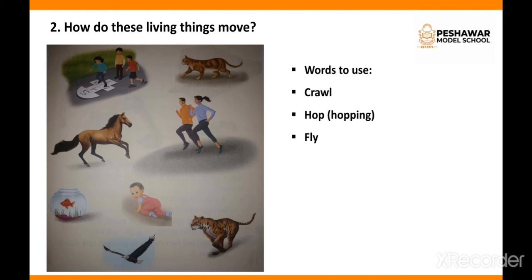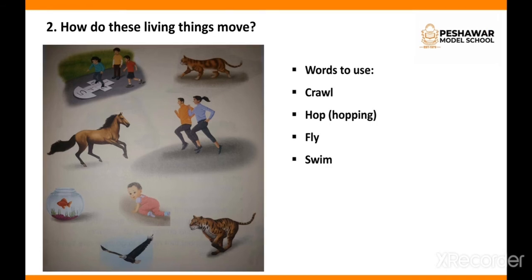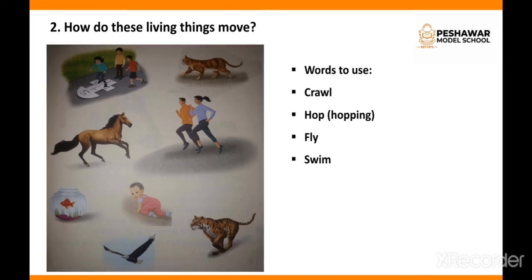Swim is a movement in which we move through water without touching the bottom surface — it is a to-and-from motion in water, which fish use to move. Next is run — to move forward quickly on two feet by alternately making a short jump off the ground.